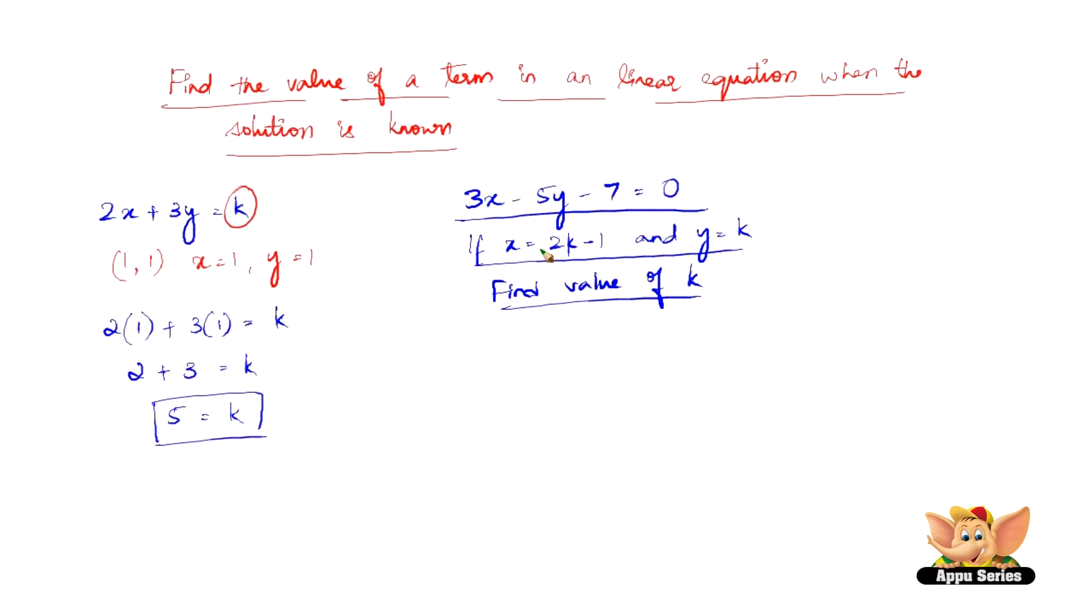Now since they have already given the solution, that is, x is so much and y is so much, let us substitute into the equation which gives us 3 into (2k minus 1) minus 5 into k minus 7 equals 0.